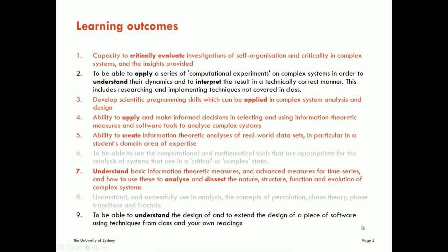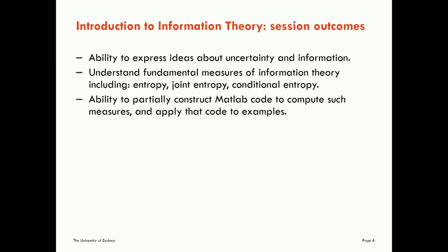Finally, since we're focusing on empirical analysis, I want you to be able to understand and extend the design of software for such analysis using the techniques we've learned in class and from your own readings. In our first lecture on introduction to information theory and entropy, the key takeaways are: to be able to express ideas about uncertainty and information — two sides of the same coin — and to understand the fundamental measures of information theory. In this lecture we'll start with entropy, joint entropy, and conditional entropy. You'll also be able to partly construct MATLAB code to compute these measures and apply that code to examples, which we'll do in the activities threaded through here.